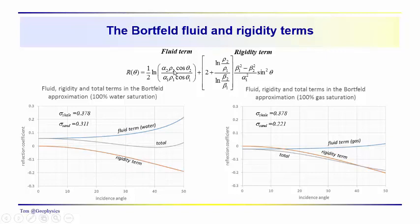We can plot up these three terms - the combination of terms here, the total, and then the fluid and rigidity term separately. Here we're looking at a case with 100% water saturation, and you can see the fluid term by itself shows an increase with offset.